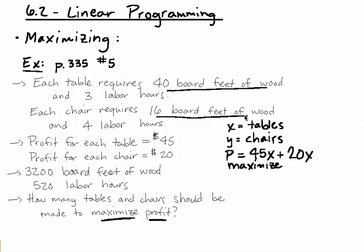Looking at the board feet of wood first, we've got a total of 3,200. And so if we use 40 board feet of wood for each table and 16 board feet of wood for each chair, this cannot be bigger than 3,200 because that's all they have. So that would be written as less than or equal to 3,200. That would be one linear inequality.